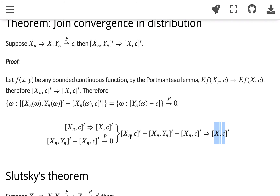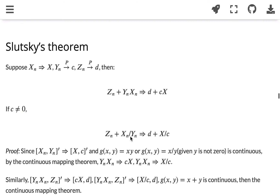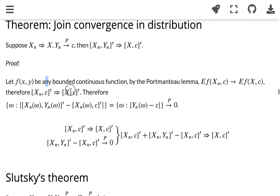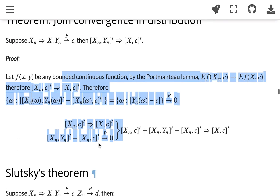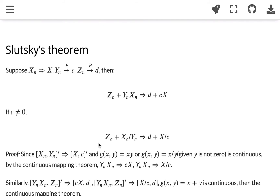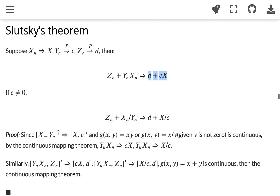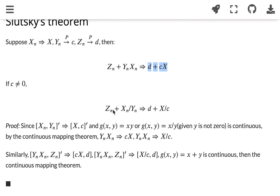With that, we can now introduce Slutsky's theorem, which is a combination built on this joint convergence in distribution result. Slutsky's theorem tells us: if Xn converges to X in distribution, Yn converges to C in probability, and Zn converges to D in probability, then Zn plus Yn times Xn will converge in distribution to its limiting distribution D plus C·X. And if C is not 0, then Zn plus Xn divided by Yn will converge in distribution to D plus X divided by C.